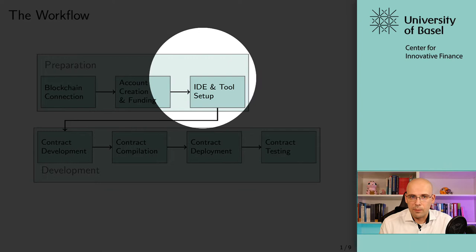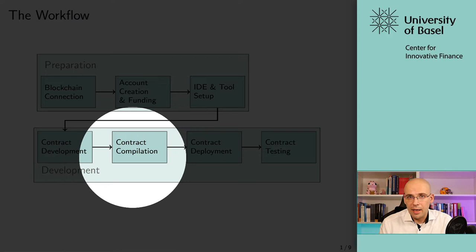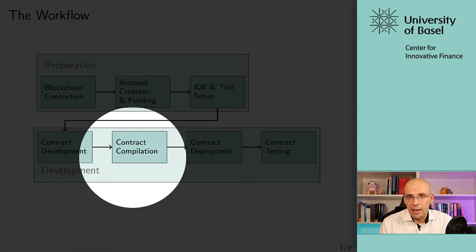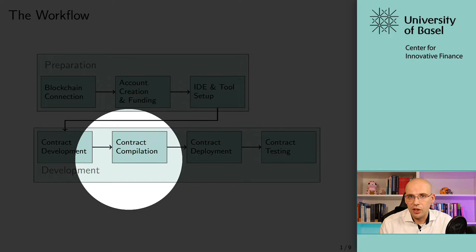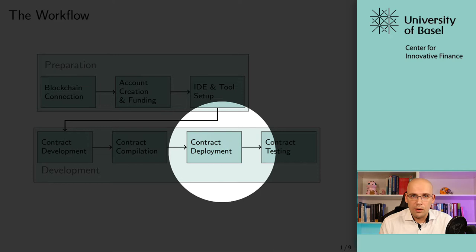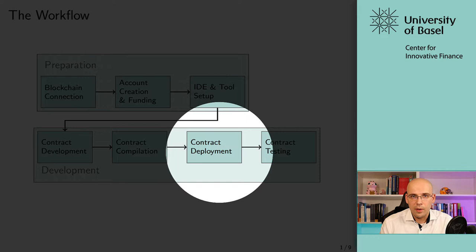In the actual development part you're creating, developing, coding your smart contract. Then you're compiling it — essentially you can think of it as a translation from your high-level code to something that can be interpreted by the machine, by the Ethereum virtual machine, the so-called bytecode. And then you deploy it. Deployment is the action of adding it to the blockchain. That's the process when you're adding it to a transaction, and when the transaction gets confirmed we say that the contract is being deployed.